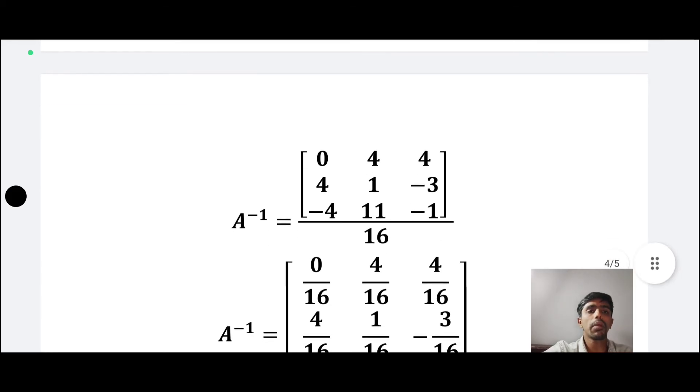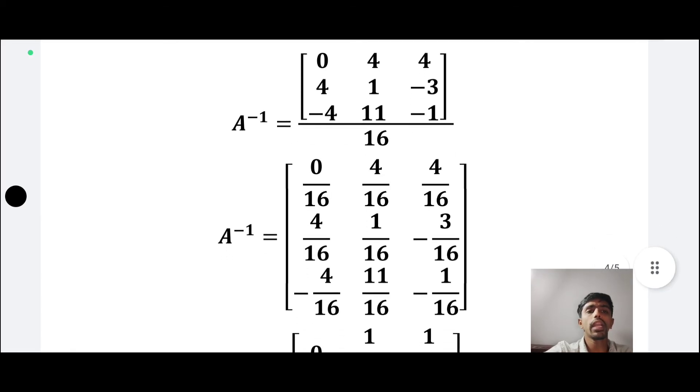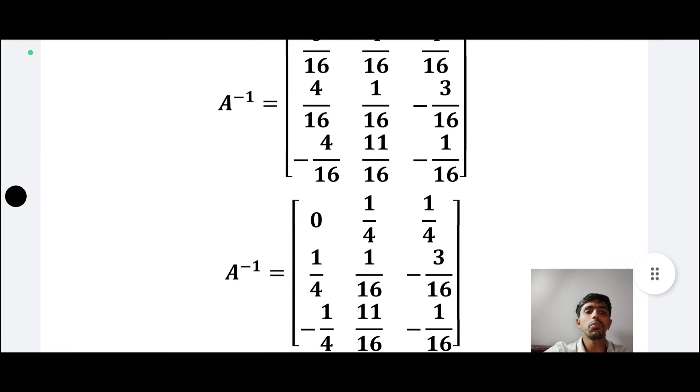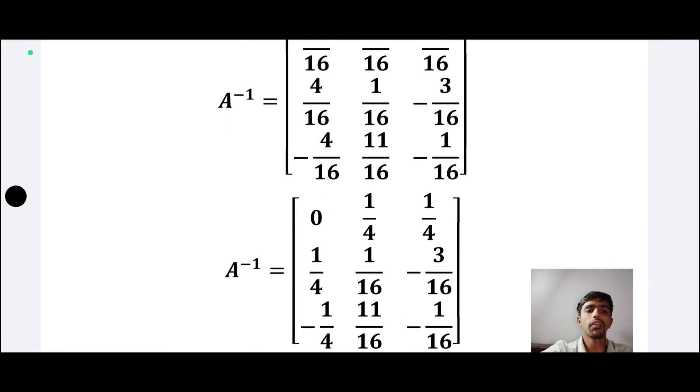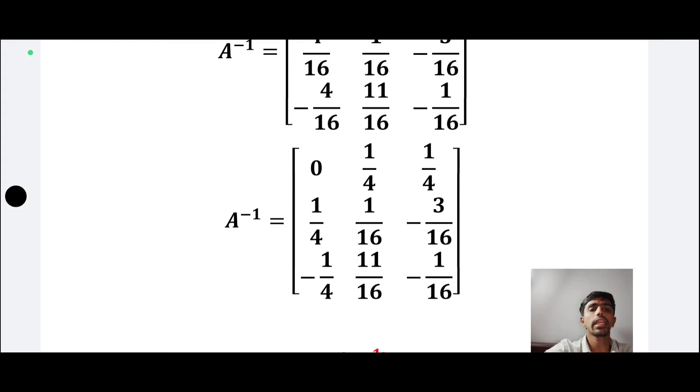A inverse is equal to adjoint A divided by 16. The adjoint matrix divided by 16: 0 by 16, 4 by 16, 4 by 16, 4 by 16, 1 by 16, minus 3 by 16, minus 4 by 16, 11 by 16, minus 1 by 16. Calculating: 0, 1 by 4, 1 by 4, 1 by 4, 1 by 16, minus 3 by 16, minus 1 by 4, 11 by 16, minus 1 by 16.